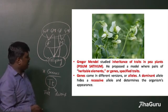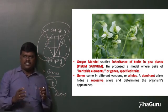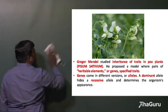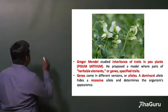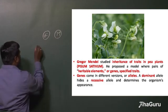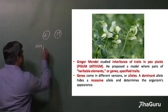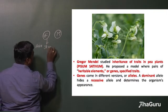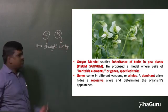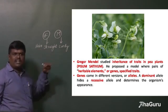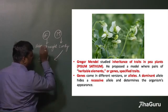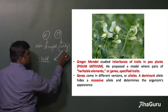Genes can be dominant or recessive. The character that is expressed in a particular generation is called a dominant characteristic. For example, your father has some characters and your mother has some characters. Taking hair as a character — your father's hair is straight and your mother's hair is curly. The child will always have curly hair, because the curly hair character is the dominant character.